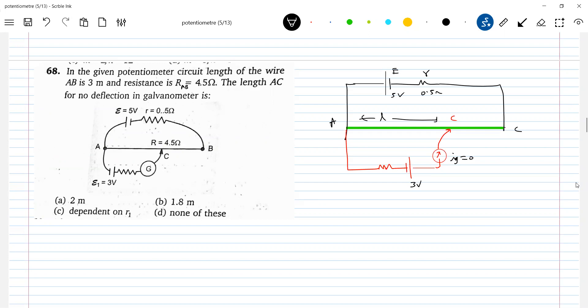Galvanometer deflection is zero, so no current will flow. So at this point, what is the basic idea?